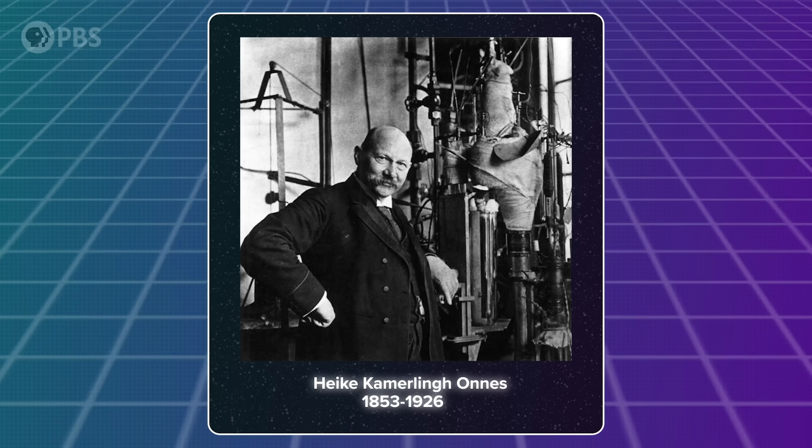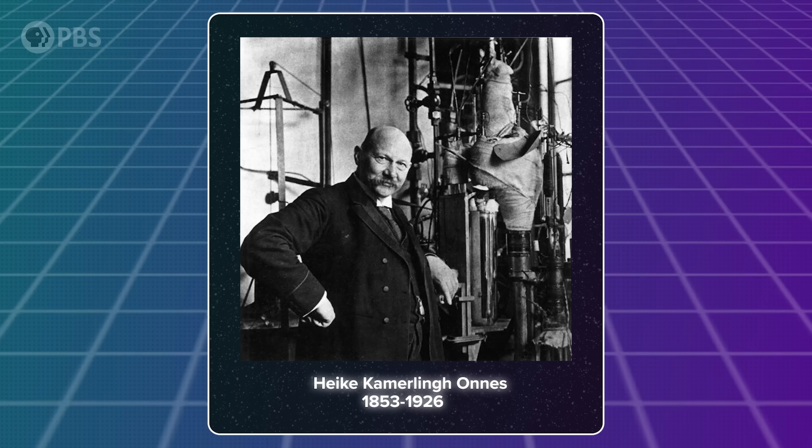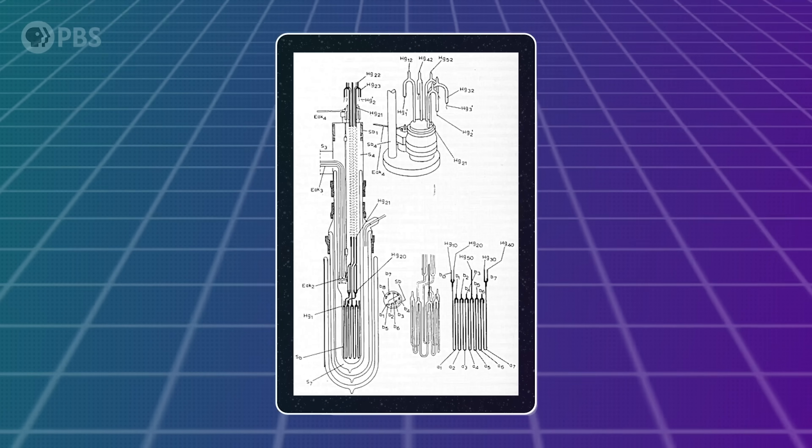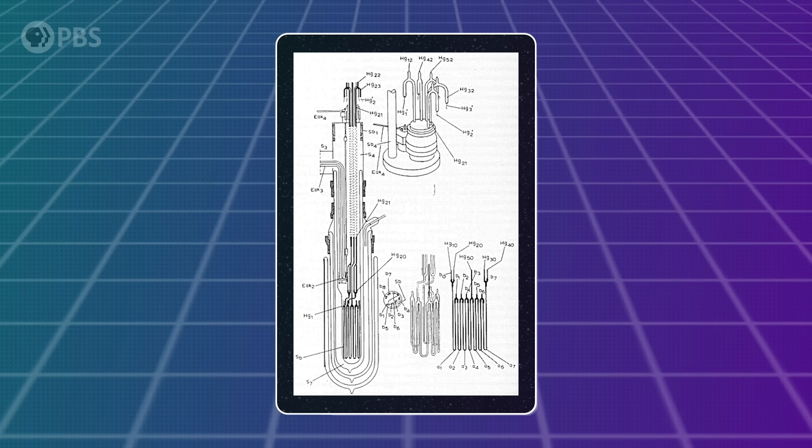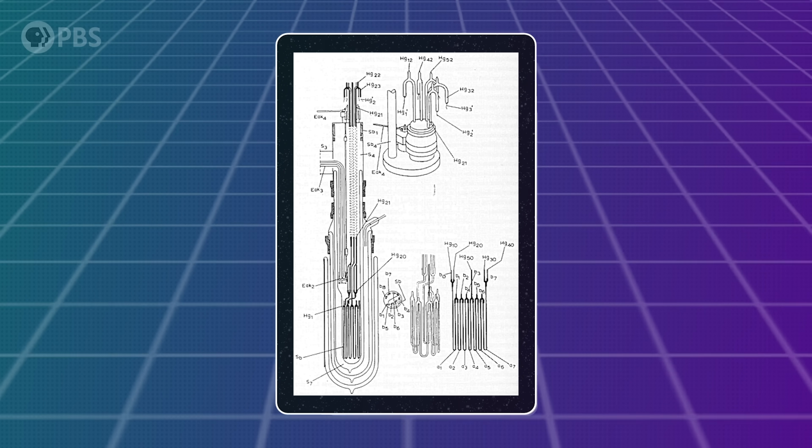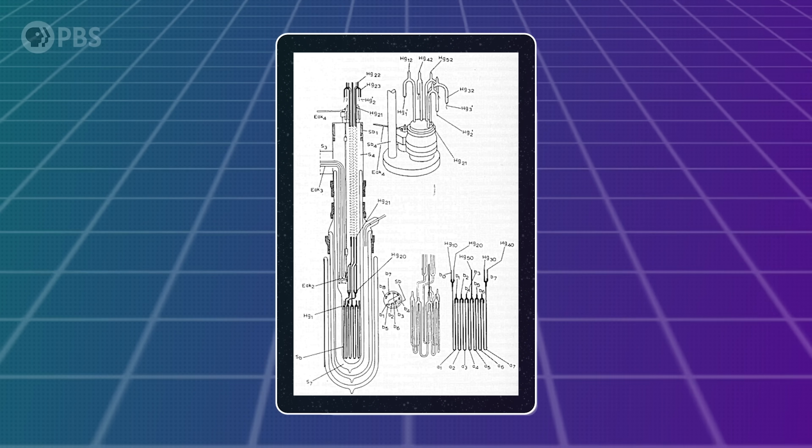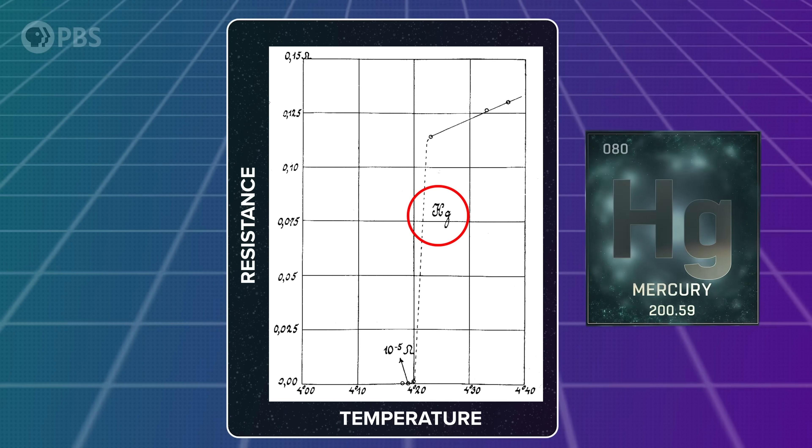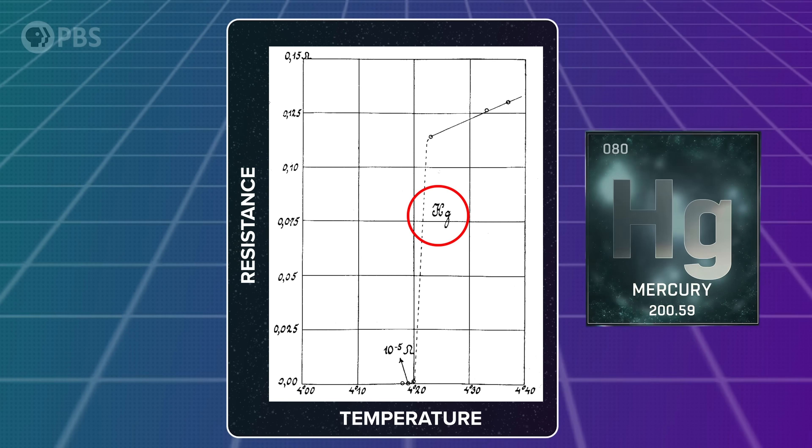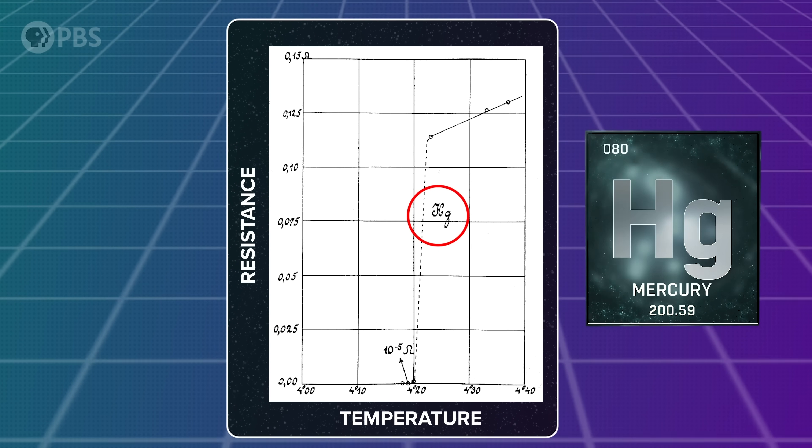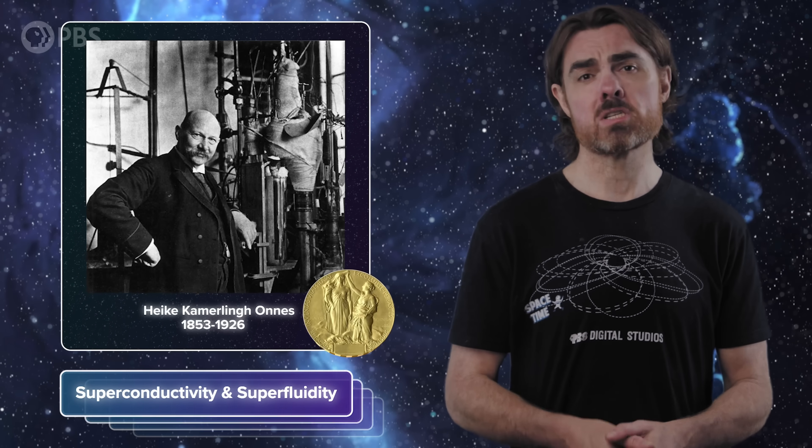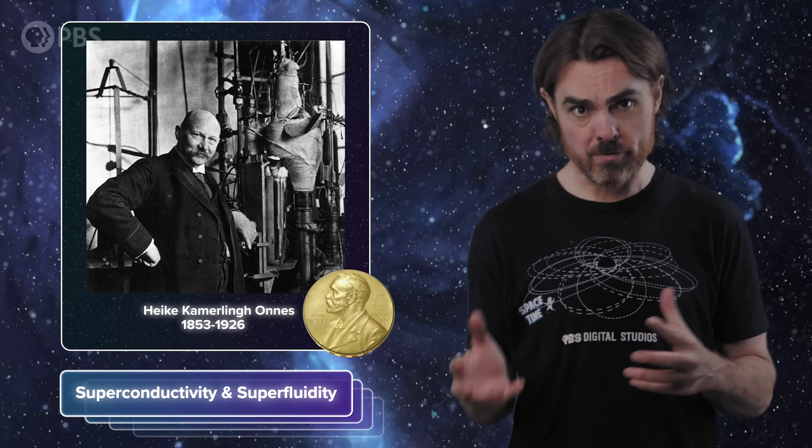In 1911, the Dutch physicist Heike Kamerlingh Onnes followed exactly this intuition. He managed to cool a wire of mercury below 4.2 Kelvin, roughly the temperature of deep space. At that temperature, all resistance in the mercury vanished. This was the first observation of superconductivity. Onnes also discovered superfluidity in helium on the way to making the temperature low enough for superconductivity, and scored a Nobel prize for his foundational work in low temperature physics.